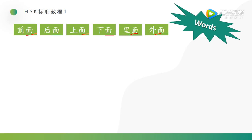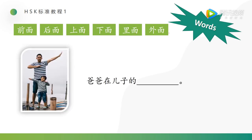Now let's do a practice. Please choose the proper words according to the picture. Like this: 爸爸在儿子的 — this is 爸爸, this is 儿子, 后面. So according to the picture, 爸爸在儿子的后面. Right — back, 后面.